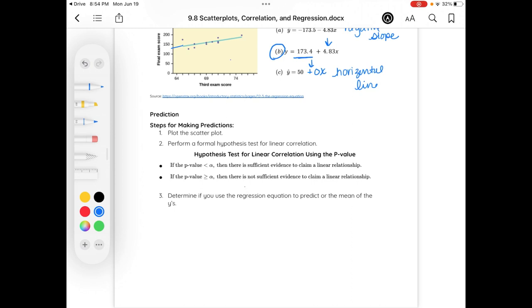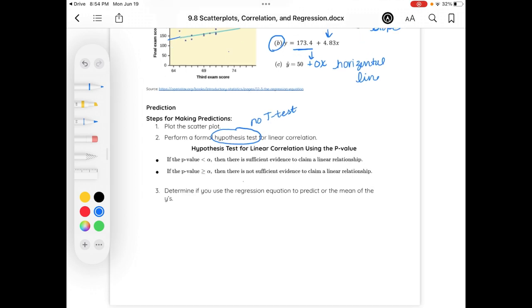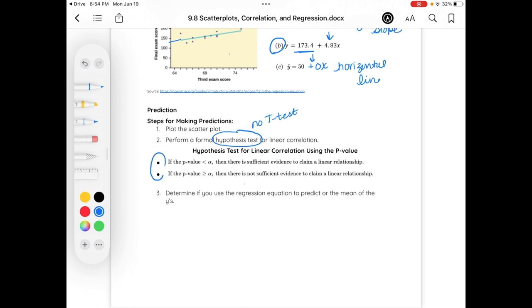For making predictions, we will plot the scatter plot and perform a hypothesis test for linear correlation. Don't worry, we are not performing any t-tests here. That would be for a statistics class. However, I'm going to be able to give you some information, and from that information, we'll be able to pull out the pieces that are needed. So, the test has already been run, now we have the information which we can then look at and interpret. This is what you're going to need for your homework.